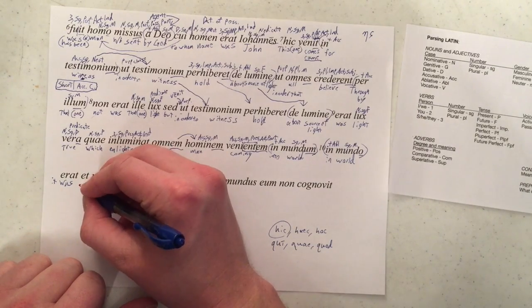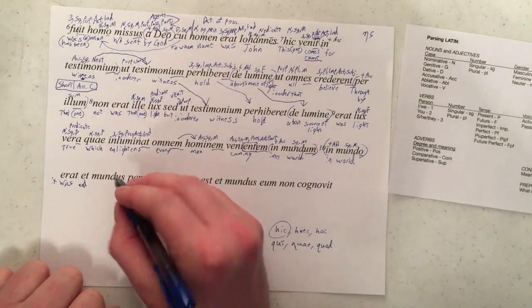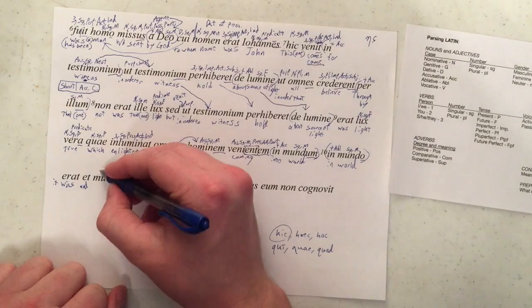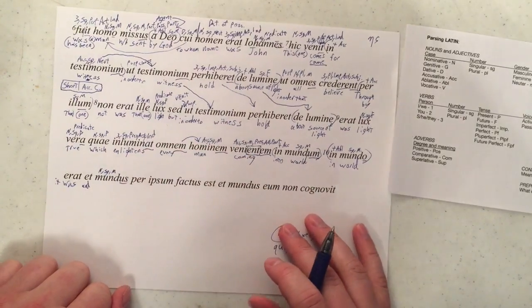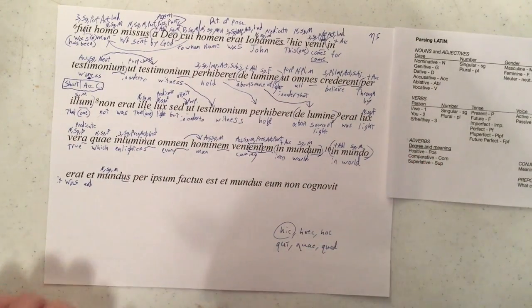Okay, et is simple, it means and. Mundus is, since it's got us as its ending, it's going to be nominative, singular, and masculine, and it's going to be the subject of this new sentence.